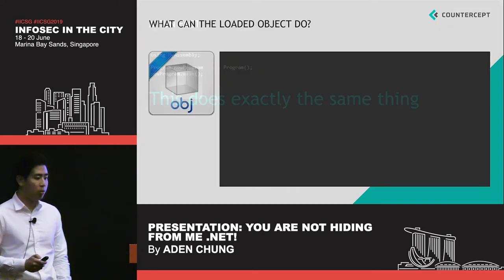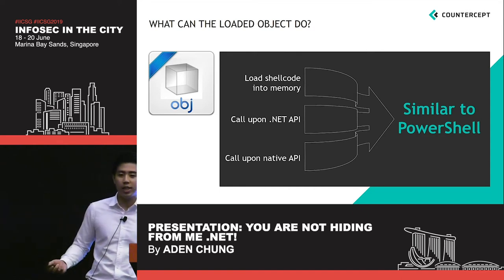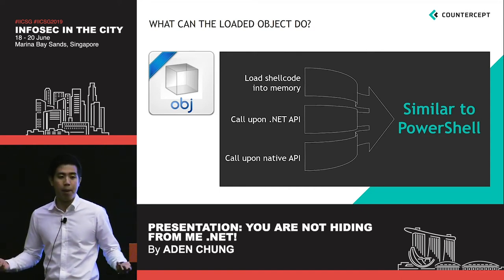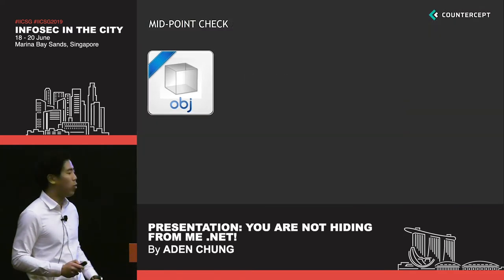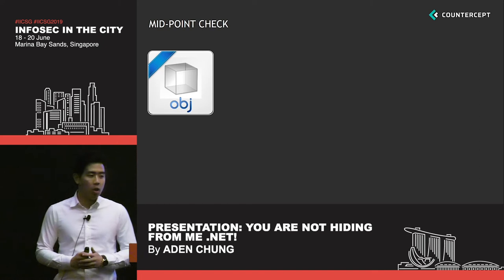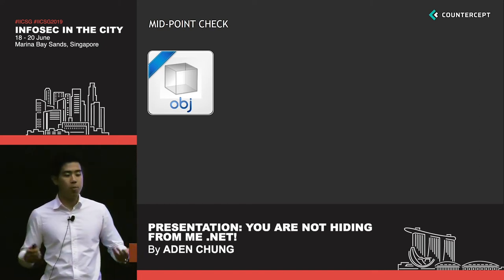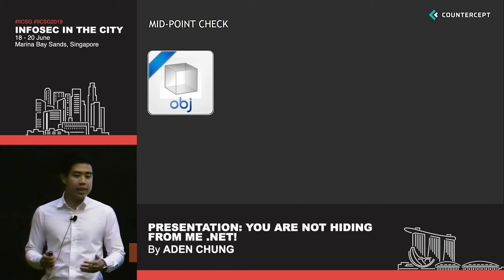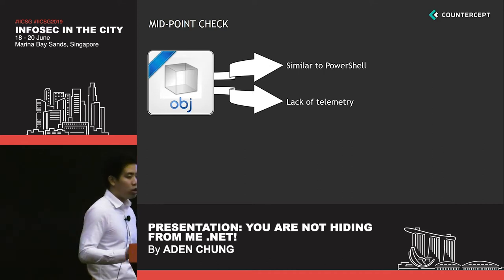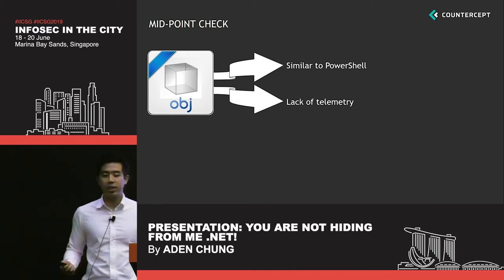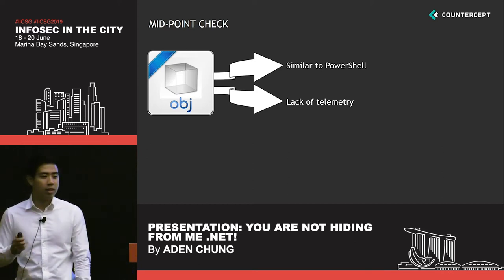Now, what can this loaded object do? Basically anything PowerShell can do, since they're all backed by the .NET framework. To give a midpoint check: we have a loaded object created through in-memory assembly loading, which can do whatever PowerShell can do — but with one key difference: there is currently a lack of telemetry towards it. This is our challenge today: can we detect this?